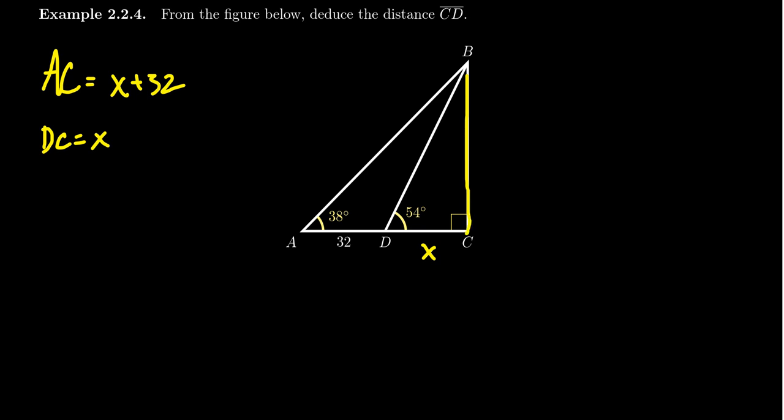Notice that DC is equal to X. But the problem is we don't know this side right here, the side BC, which is connected to both of those triangles. Let's call it Y for a moment. That's a shared common side, and so maybe we can utilize that to try to solve for this variable X.